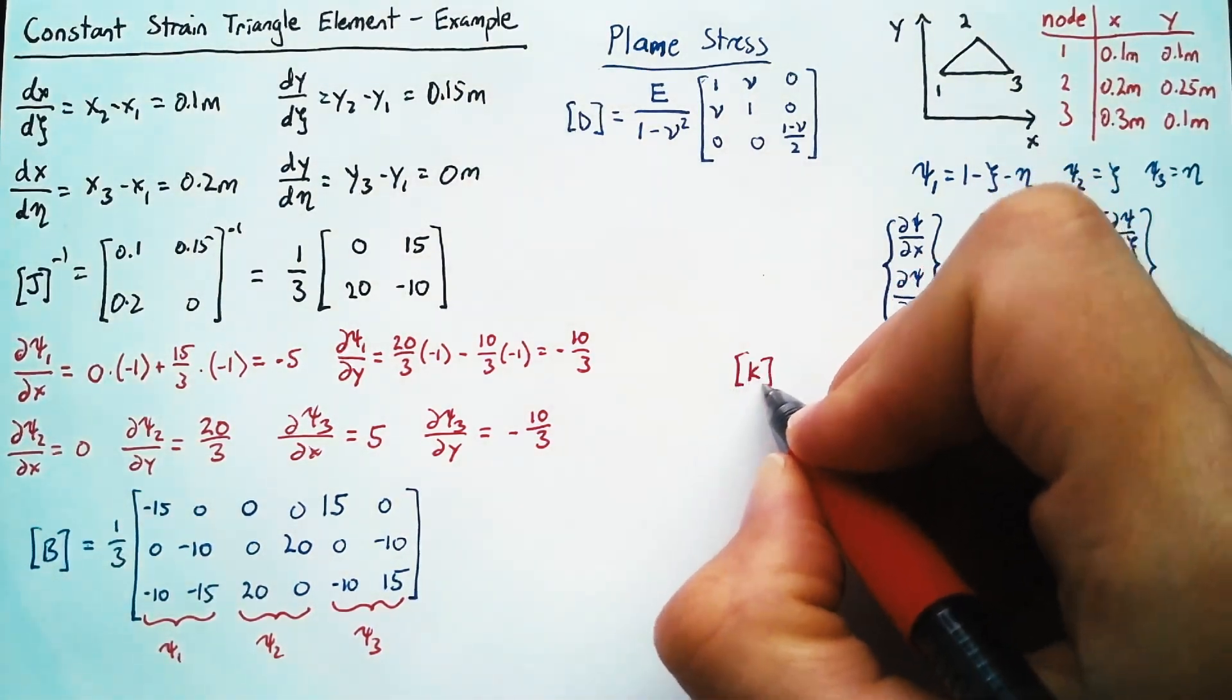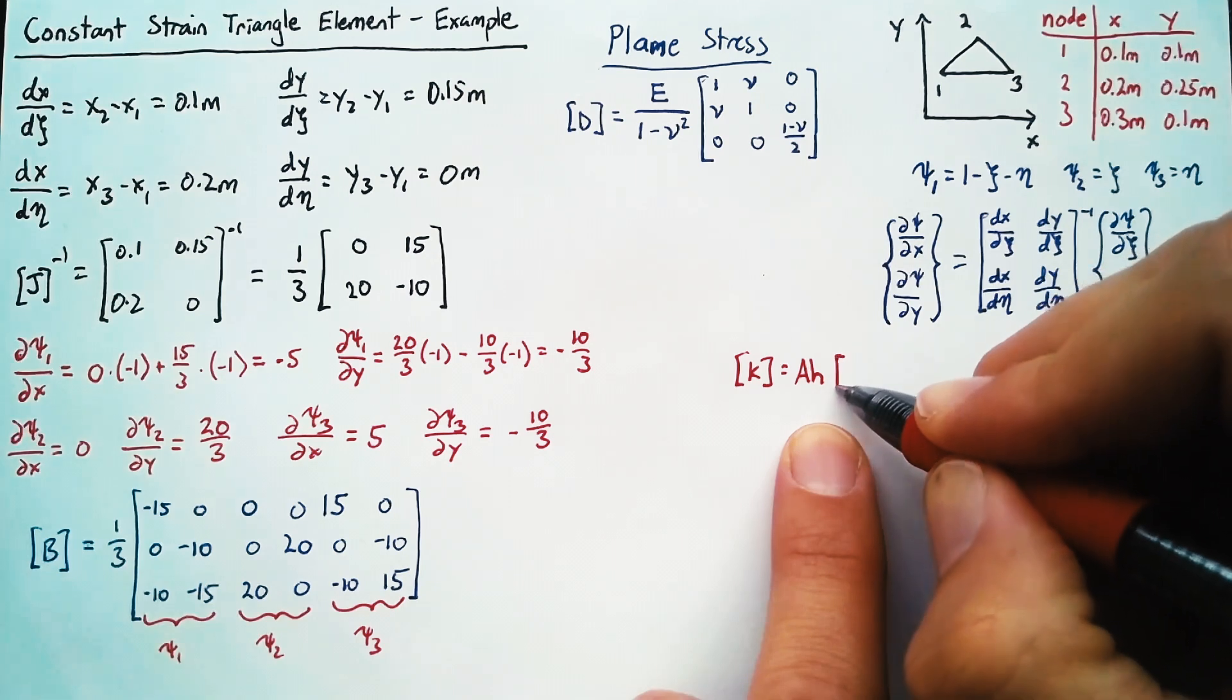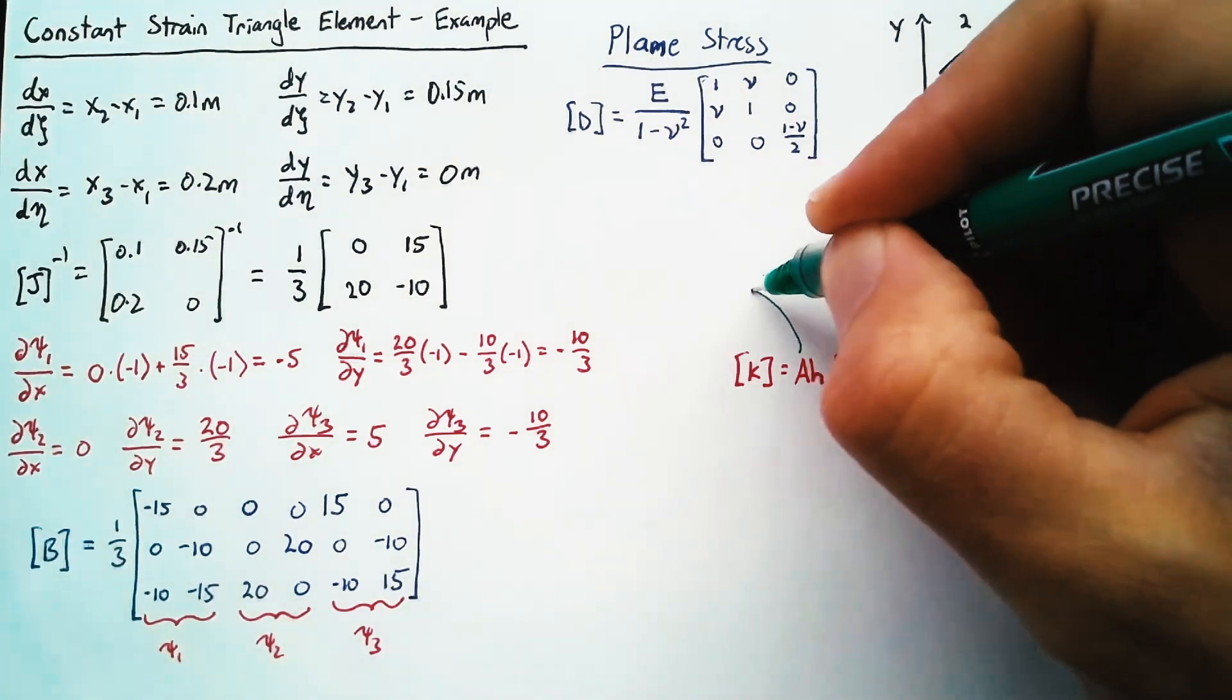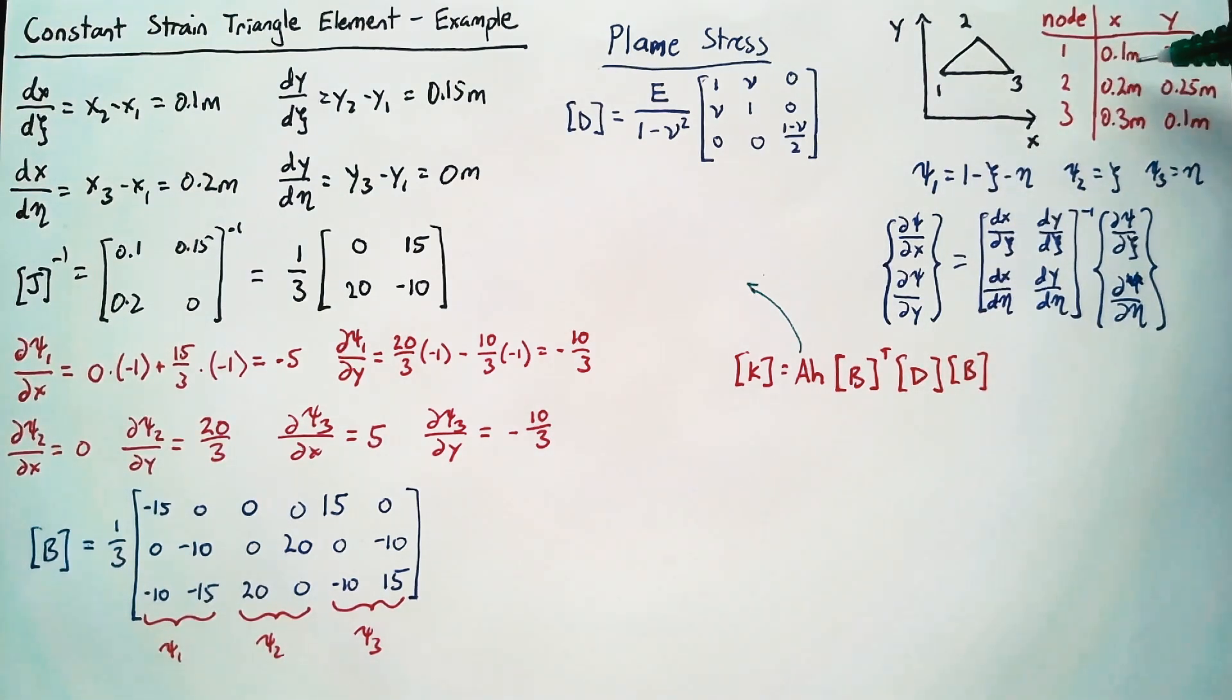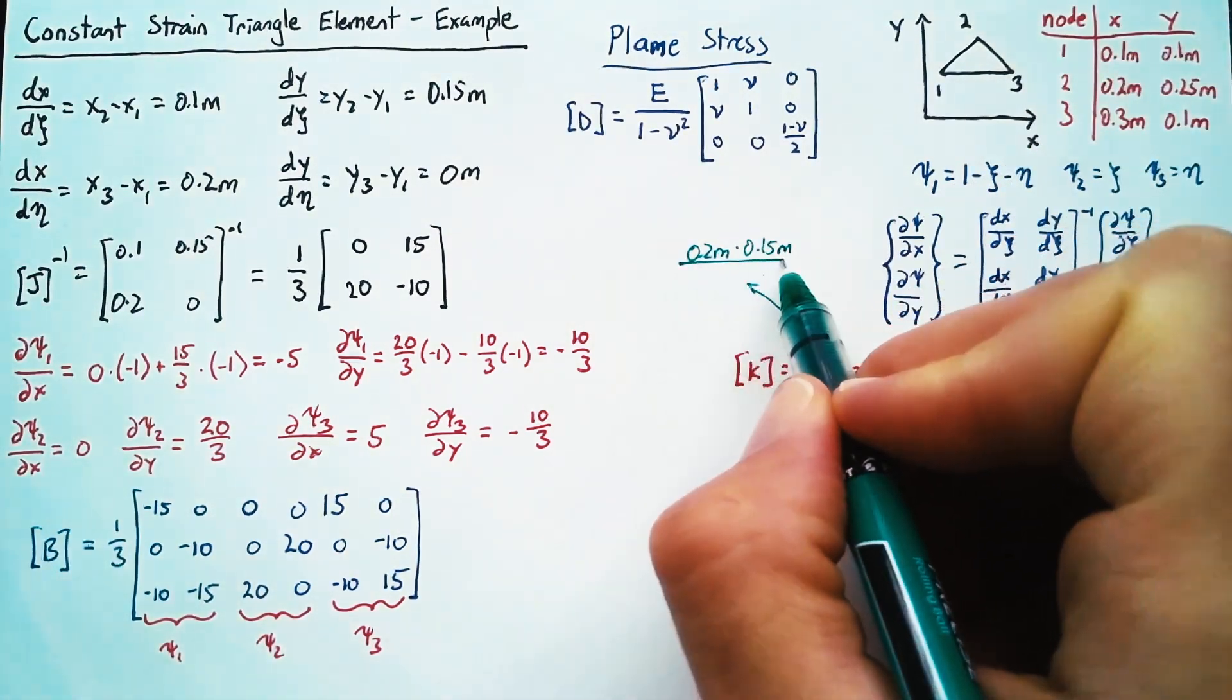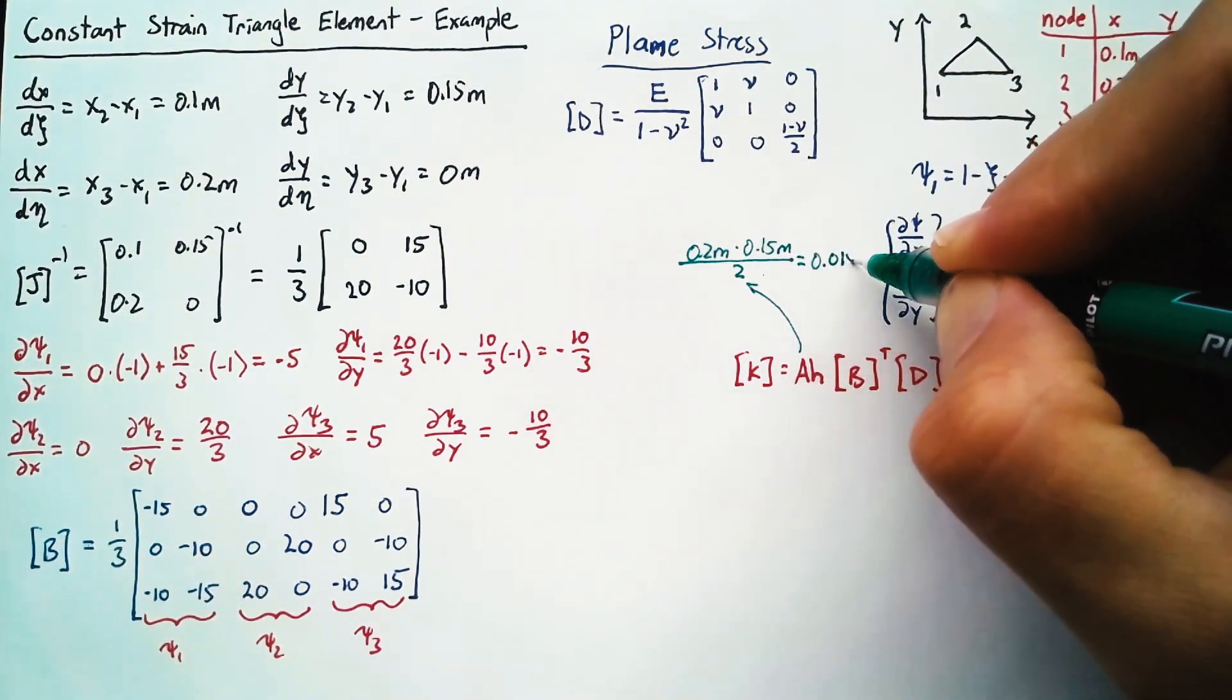Now our K matrix was equal to the area multiplied by the thickness of the element multiplied by B transpose db. Now this area is easy to calculate because this is a triangle. And so we just take the base, which is 0.2 meters, multiplied by the height, which is 0.15 meters. And that's all divided by 2. And so this is just 0.015 meters squared.